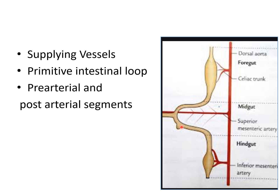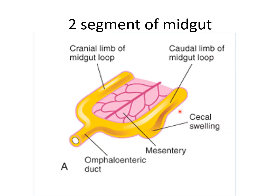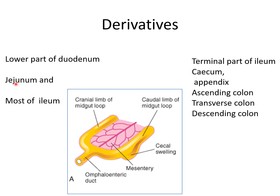During the greater part of fetal life, the appendix arises from the apex of the cecum. Subsequently, the lateral wall of the cecum grows much more rapidly. So from the post-arterial segment: the ascending colon develops distal to the cecal part. The cranial limb of the midgut loop gives rise to the lower part of the duodenum, jejunum, and most of the ileum. The caudal limb gives rise to the terminal ileum, cecum, appendix, ascending colon, and transverse colon.